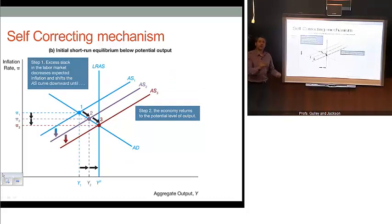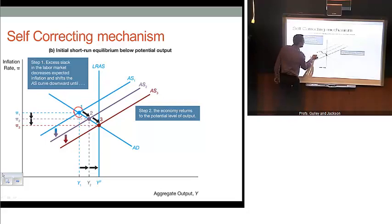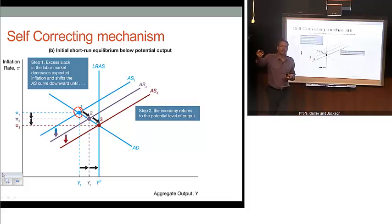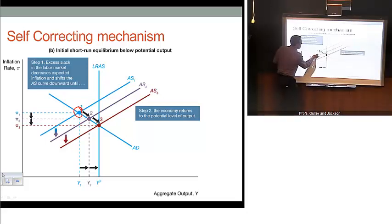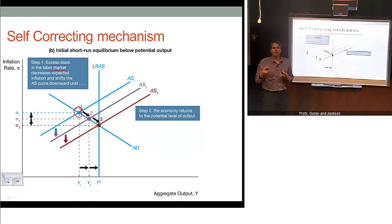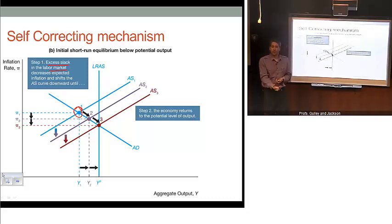We can also tell an analogous story on the flip side with the self-correcting mechanism. If we're sitting at point one, note that this represents a recessionary condition — output is below potential. That also means the unemployment rate is above the natural rate, because the natural rate and the potential level of output are synonymous. So if we're sitting at point one, there's slack in the labor market. We have idle workers and idle capacity in capital. That puts downward pressure on the price of capital and wages.